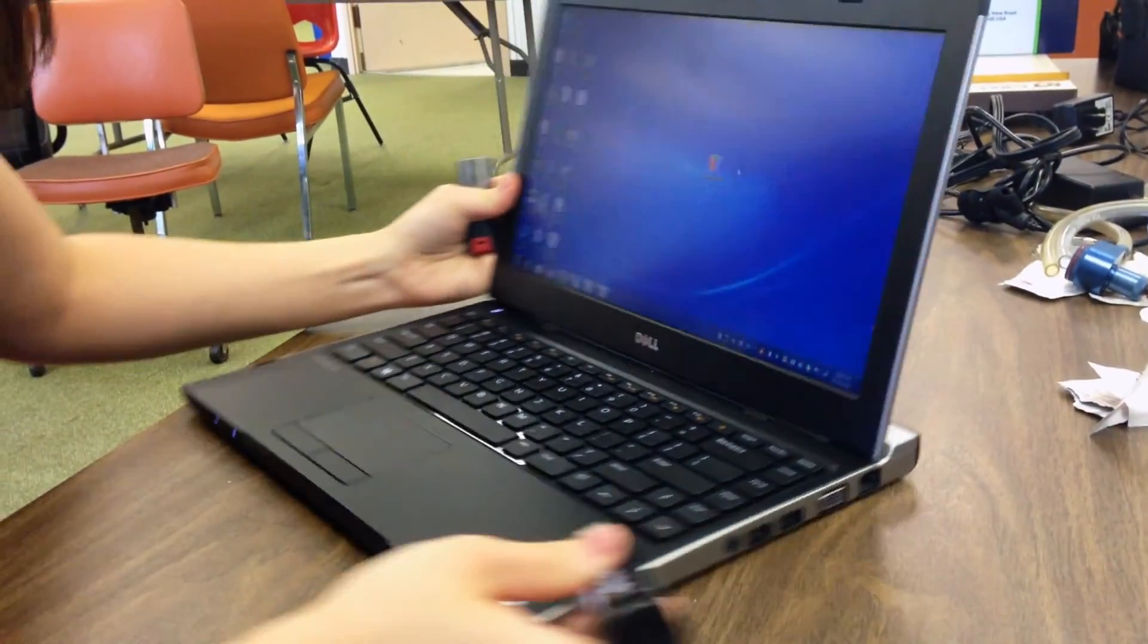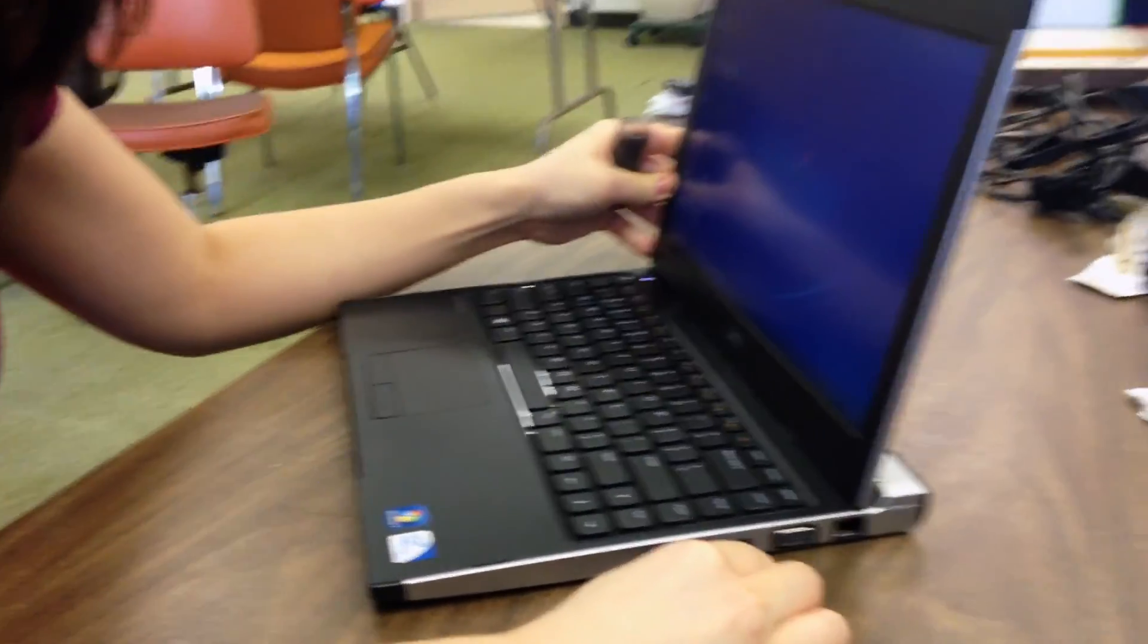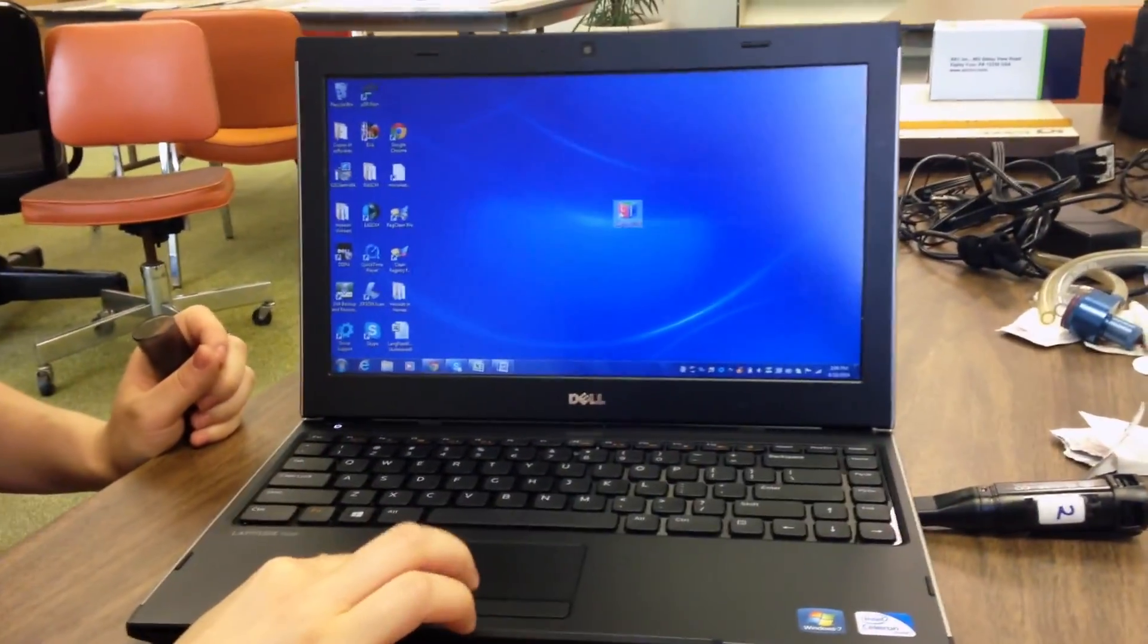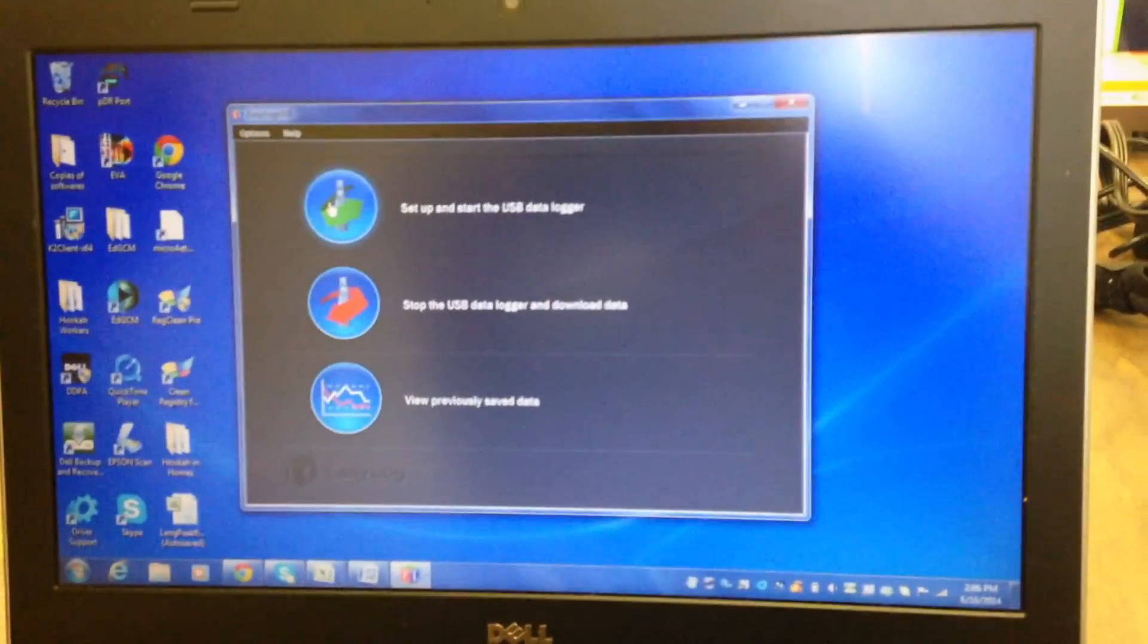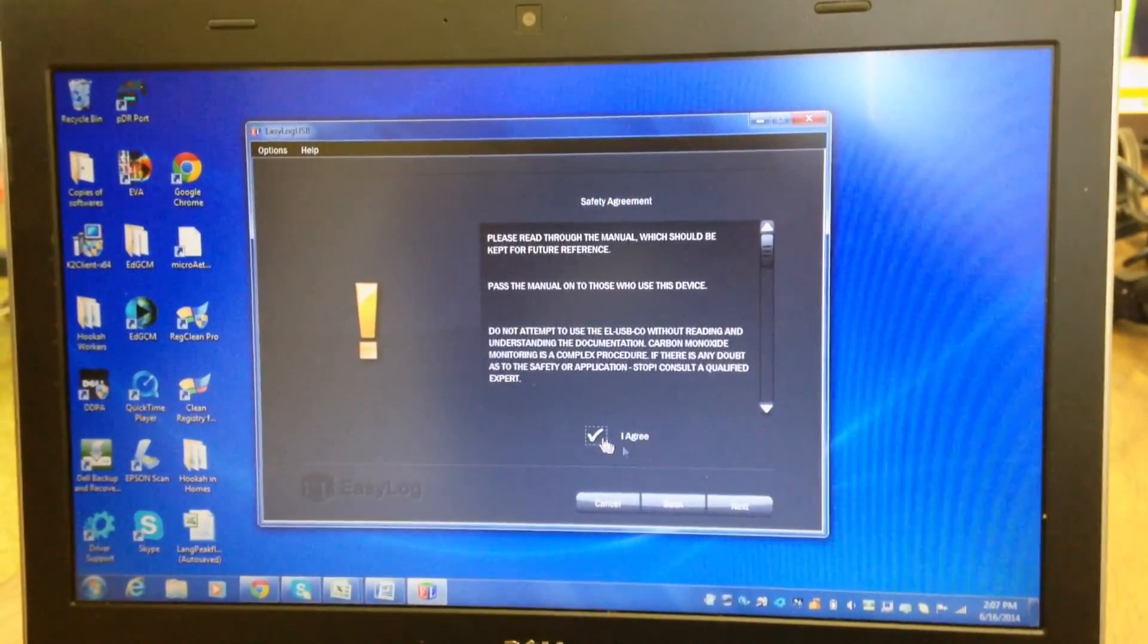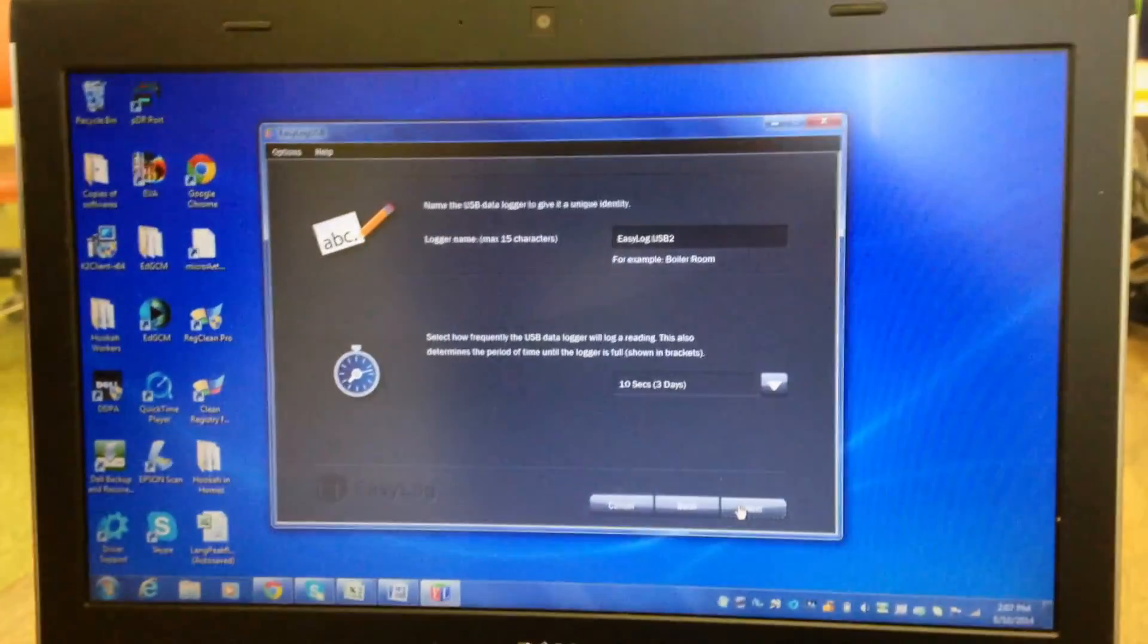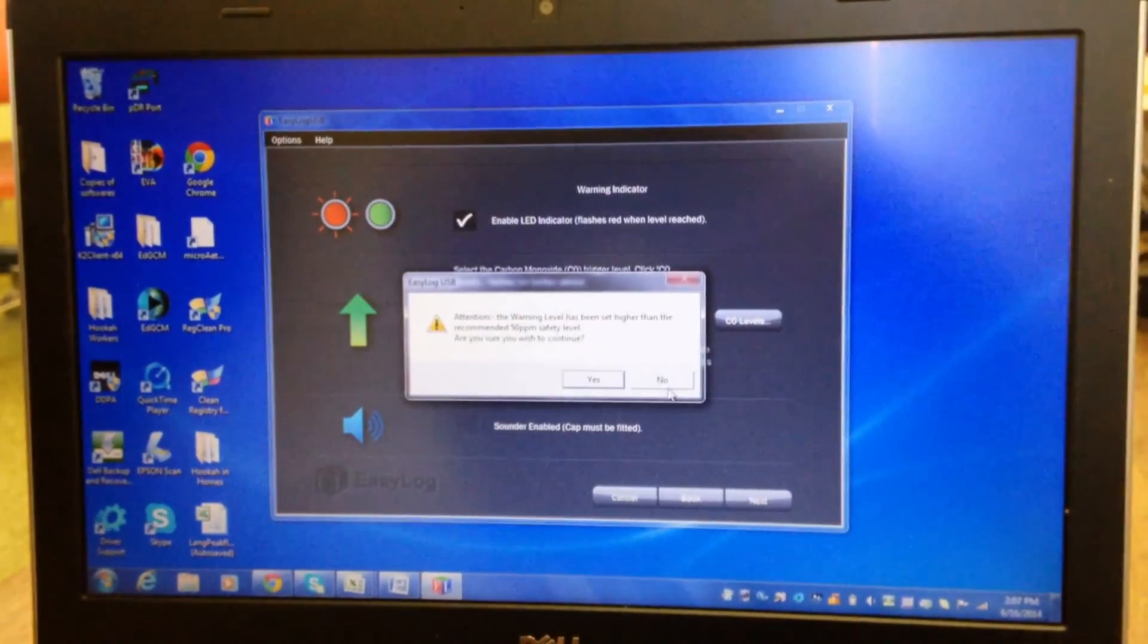In order to start your CO data logger, first remove the cap, then insert the monitor into the USB port of your computer. Use the logger software to set up the instrument. It can be configured by logging time and with a delayed start to continuously measure CO levels. A green light will flash every 10 seconds to indicate that it is currently logging.